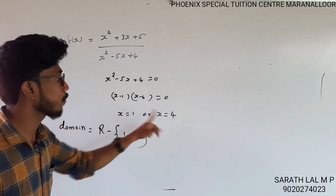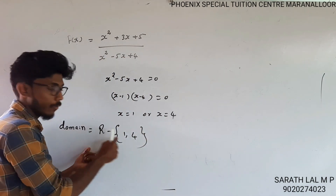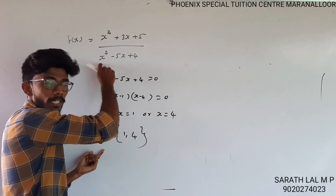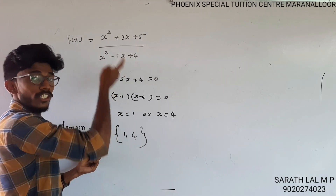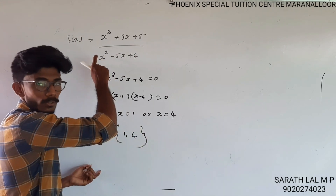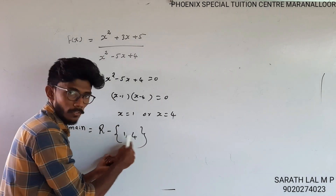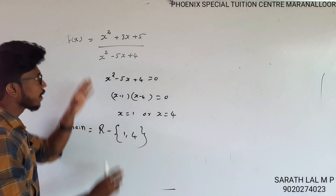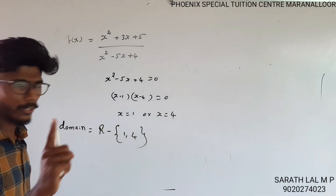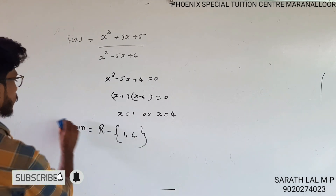So what value of x is acceptable? If we have the real numbers, what value of x is to be in the real number — we can substitute x to the domain. The domain is the real numbers. One and four are excluded from the domain. Let's look at another part.